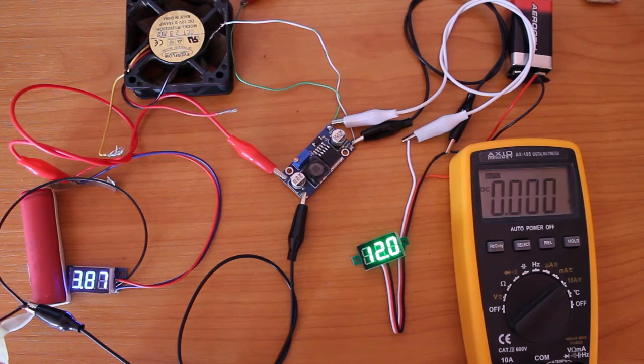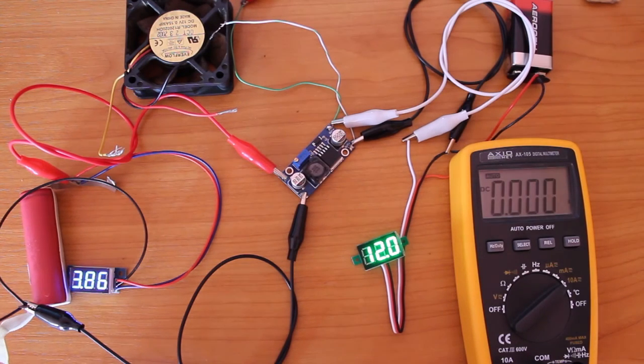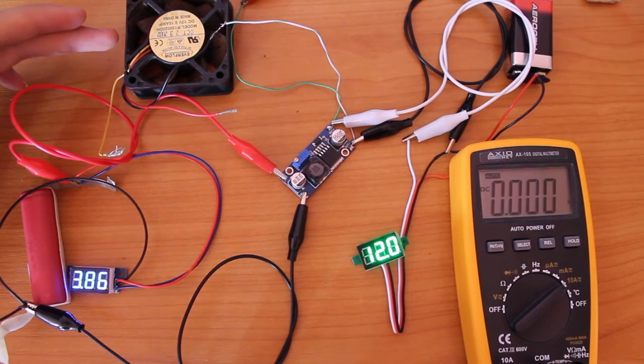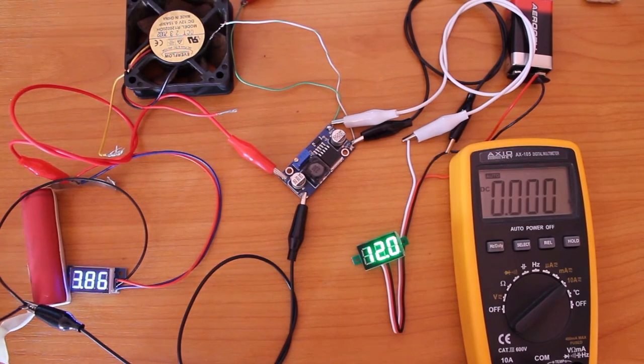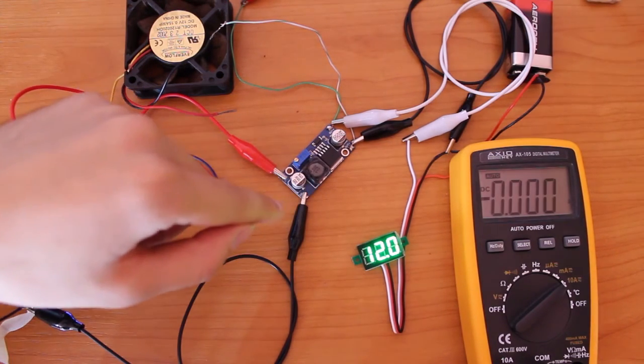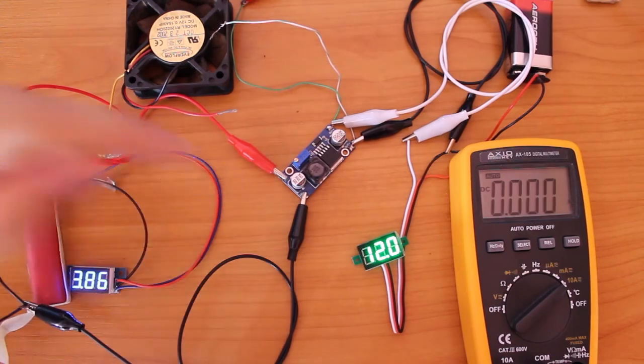These types of boost converters are very useful on projects where you have limited space or you need portability. Here for example, I'm powering this 12 volt fan from a single lithium cell. The cell outputs 3.8 volts and the boost converter gives out 12 volts.